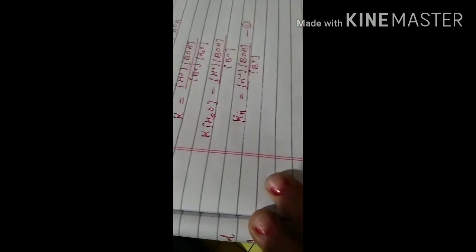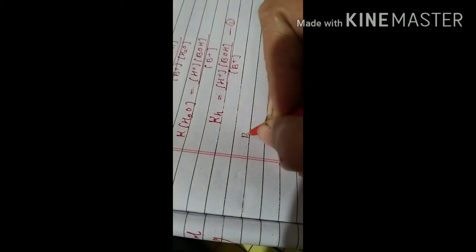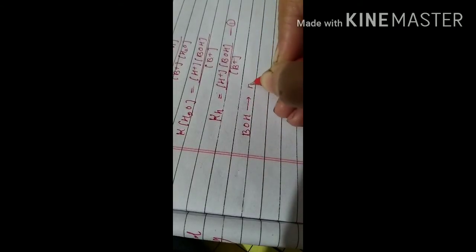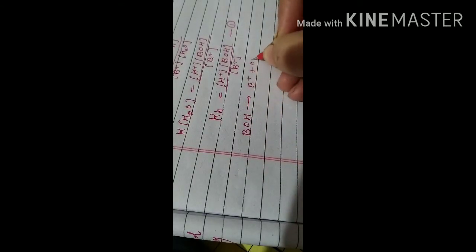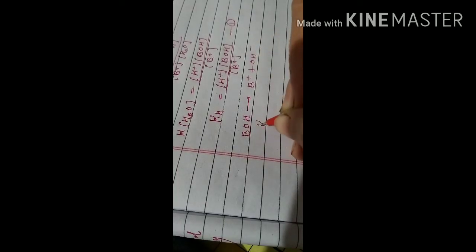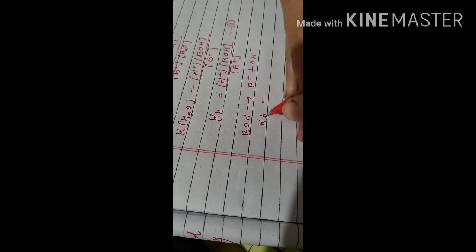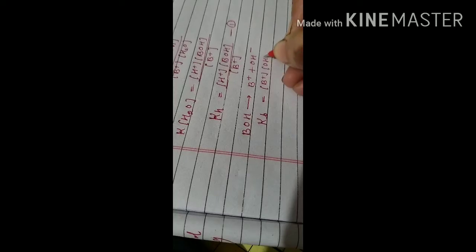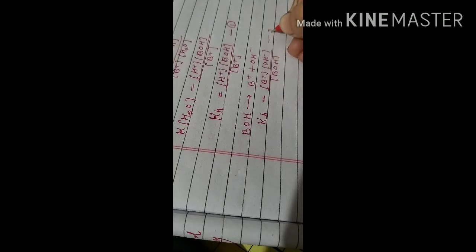Since the base is weak, BOH dissociates partially into B⁺ and OH⁻. The dissociation constant for the base, Kb, equals the molar concentration of products [B⁺][OH⁻] divided by the molar concentration of [BOH]. This is equation two.